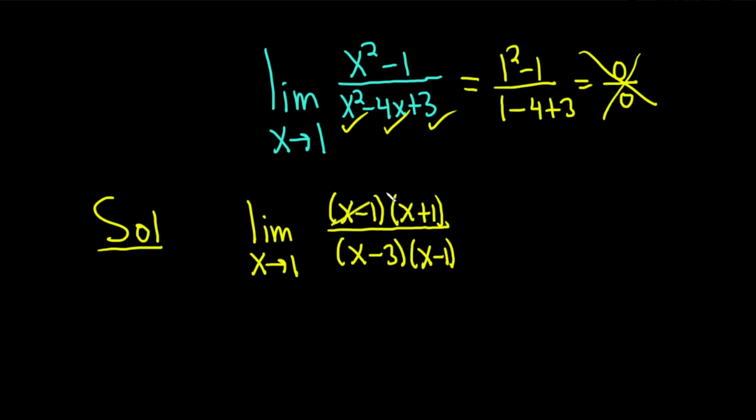And this is really nice, because now you see you get some cancellation. You can cancel the x minus 1s. This is equal to the limit as x approaches 1 of (x plus 1) over (x minus 3).